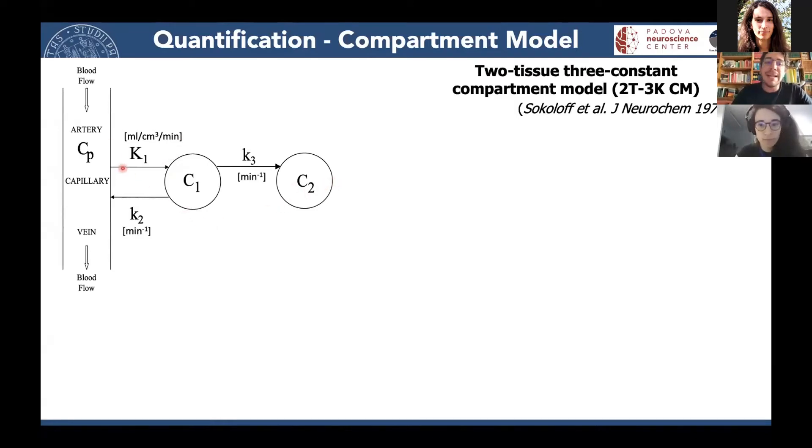K1 describes the influx of the tracer from the arterial blood into the brain tissue, the first tissue compartment. K2 is instead the retrograde efflux into the venous blood. And K3 describes exactly what Arianna was saying before, so the phosphorylation of FDG by the hexokinase enzyme inside the neurons and glial cells.